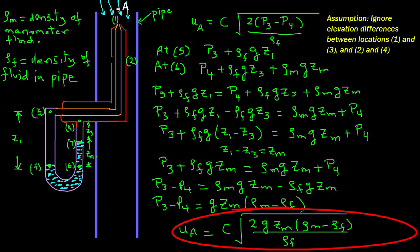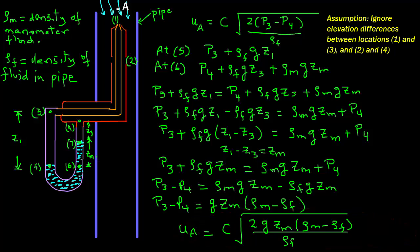We can now substitute this expression for P3 minus P4 into the velocity equation from the previous tutorial. To use this with a manometer, we need to know the displacement of the manometer fluid Zm, as well as the densities of both the manometer fluid and the pipe fluid. Using this expression, we can calculate the velocity Ua at location A. Note that this is the point velocity, not the average velocity. To find the average velocity with a Pitot tube, we would need to measure velocity at several points across the pipe, and there are methods to do that which will be covered in a different tutorial.